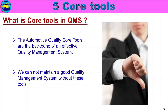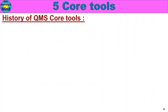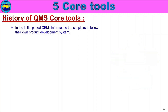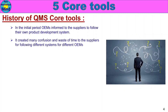Next is the history of QMS core tools. In the initial period, OEMs informed their suppliers to follow their own product development systems. In the 1980s, each supplier followed the standards of each of their customers. This created a lot of confusion and waste of time for suppliers who were following different systems for different OEMs.